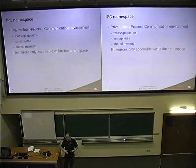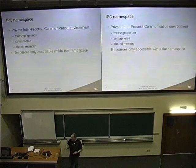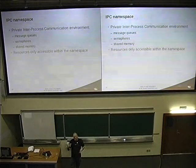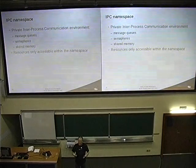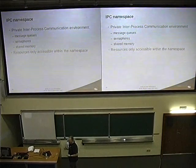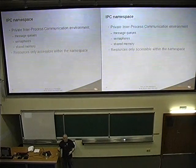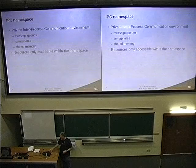IPC namespace covers message queues, semaphores, and shared memory. You get a whole new set of these — you don't see anyone outside your container, and processes inside the container can share them. You can have the same IPC names as other namespaces on the system, but you can only reuse those names inside your container.